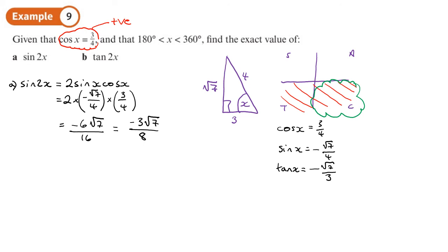And for part b, tan 2x is going to be 2 tan x over 1 minus tan squared x. So that'll be tan x is negative root 7 over 3, so 2 times negative root 7 over 3 over 1 minus negative root 7 over 3 squared.